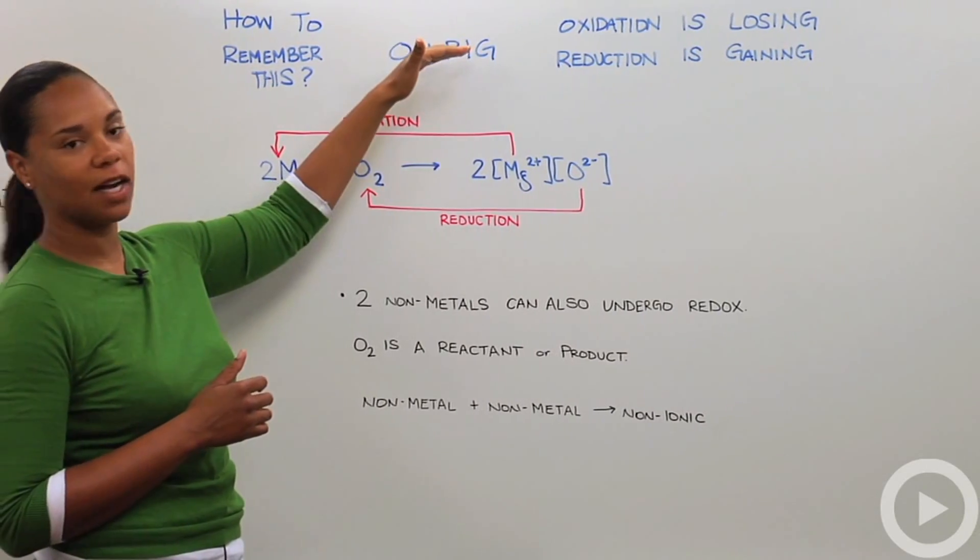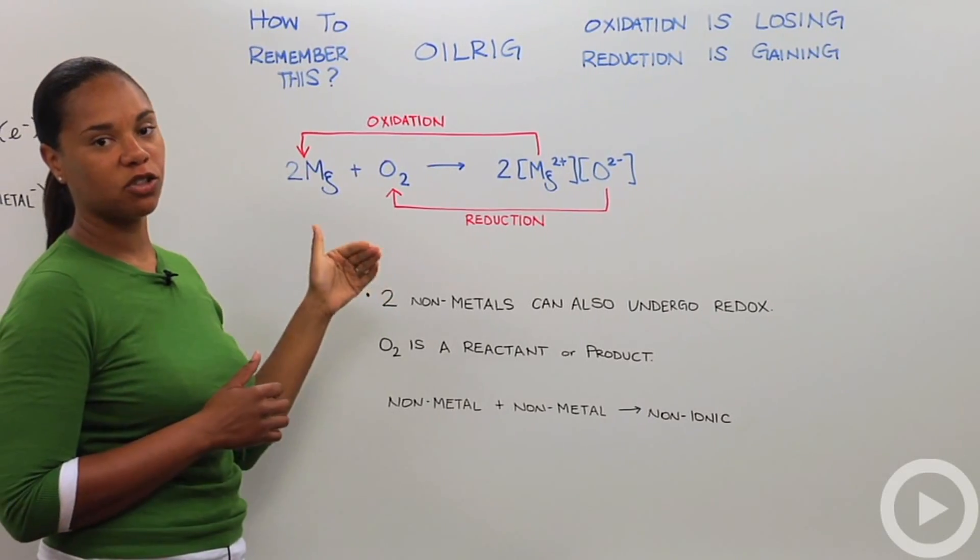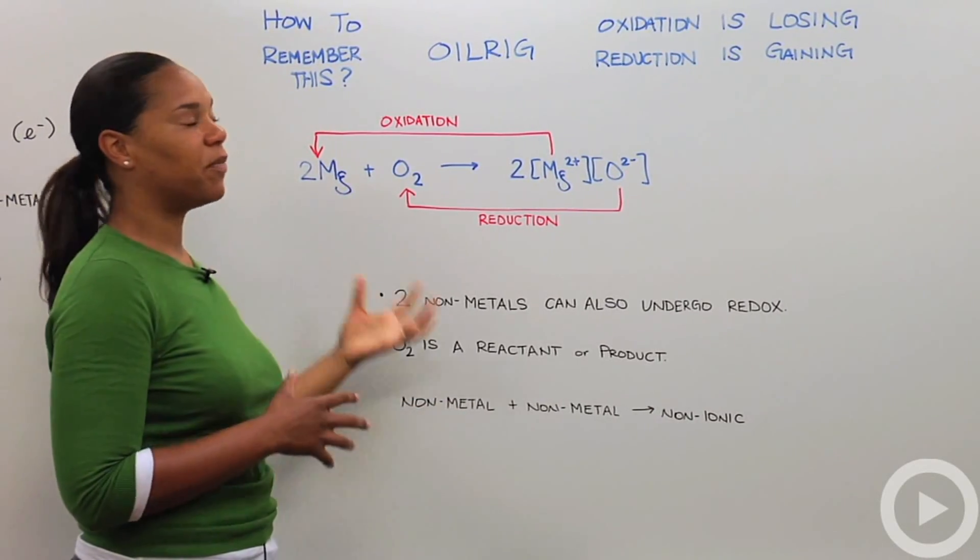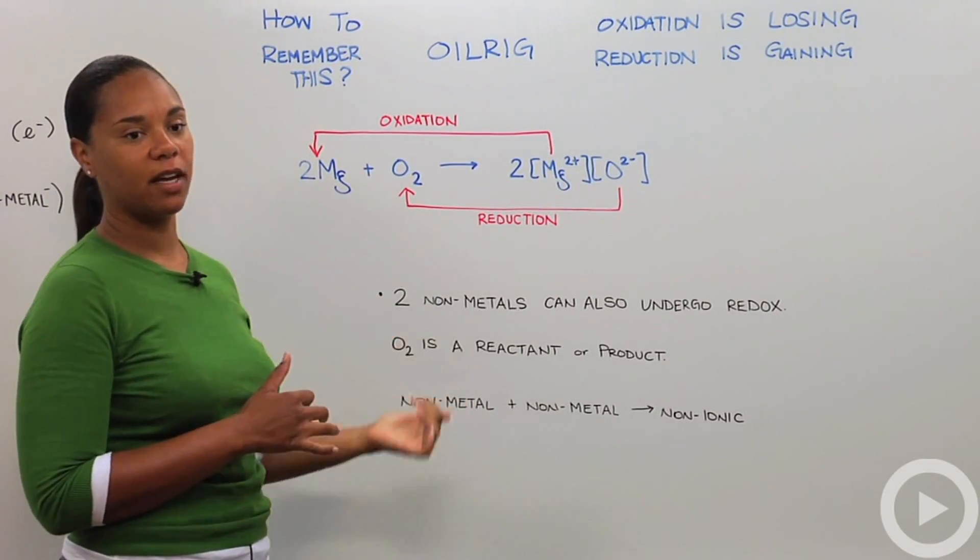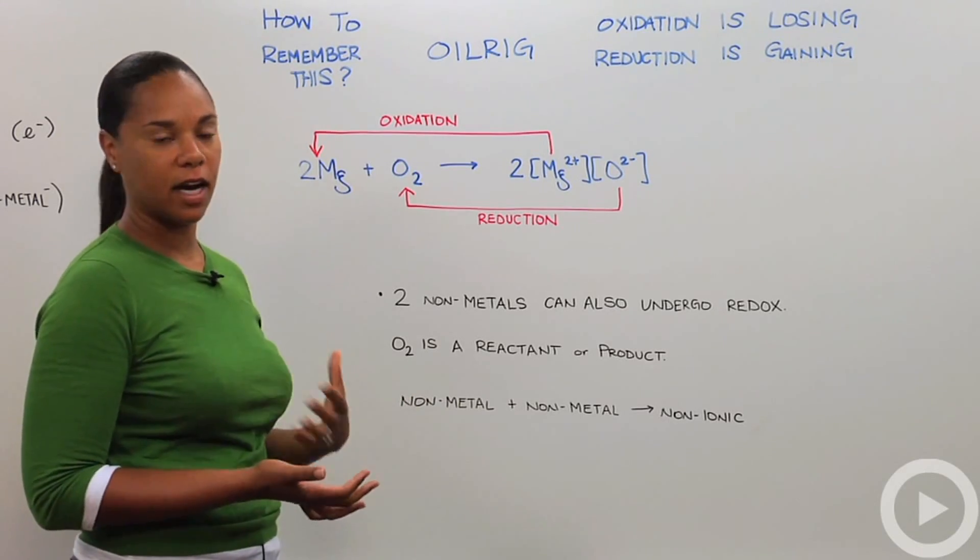So when something is oxidized, you lose electrons, or gain a positive charge. When something is reduced, that means you gain electrons, or you gain a negative charge.